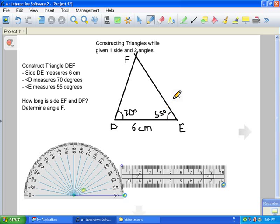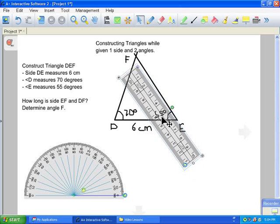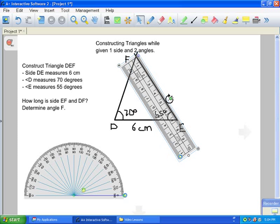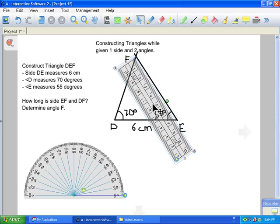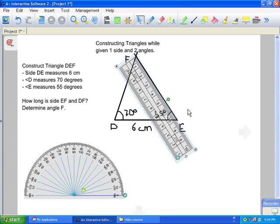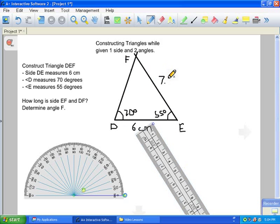Now we need to determine the sides of this triangle. So we're going to take our ruler once again, and we're going to measure the line. Make sure your ruler is perfectly on, and we can see that it is about 7.1 centimeters for side EF.